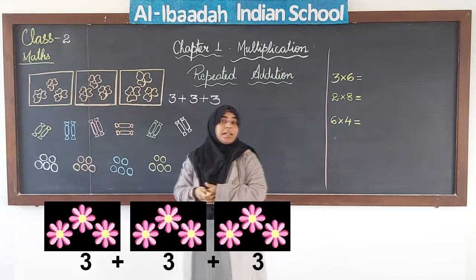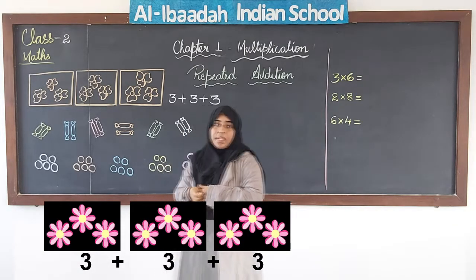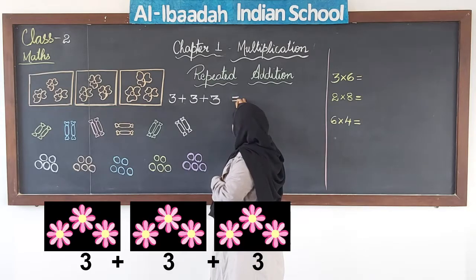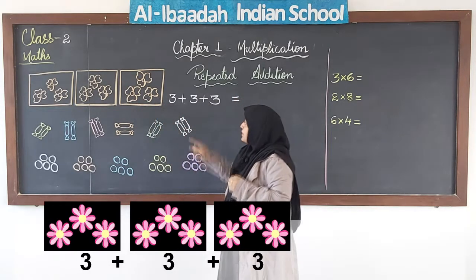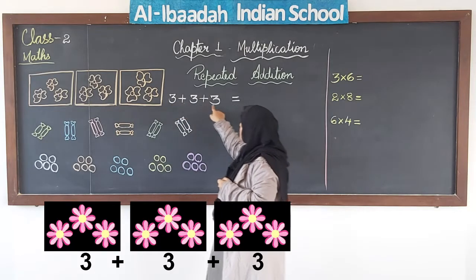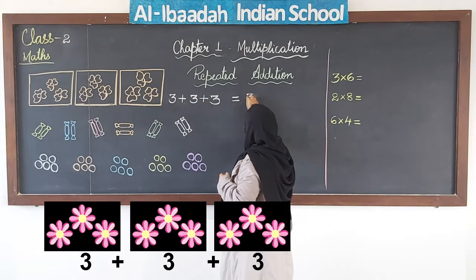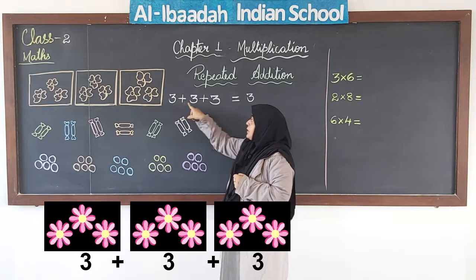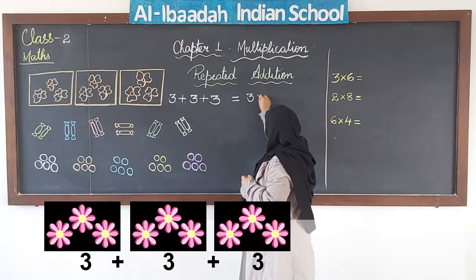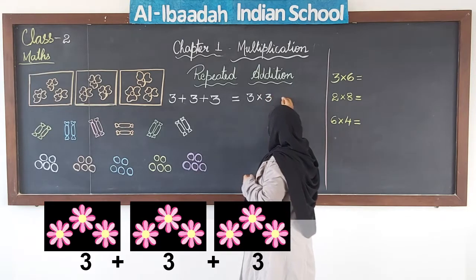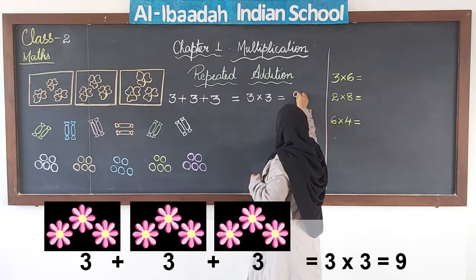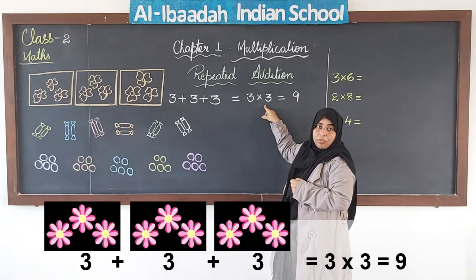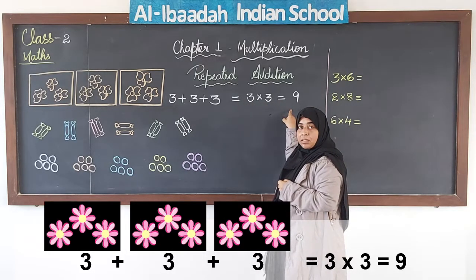The same thing I can change to multiplication form. How many times am I adding? I am adding 3 times, and the number I have repeatedly added is 3. So 3 into 3 is equal to 9. You can see the addition can be changed to multiplication form and the answer will remain the same.